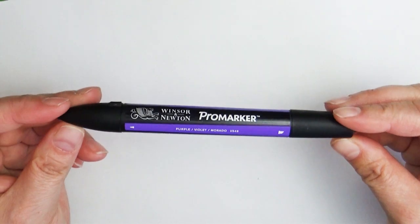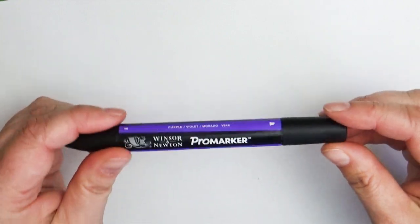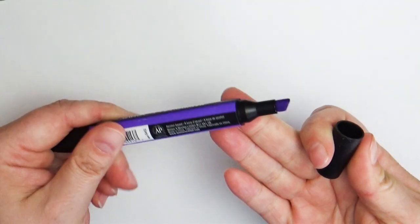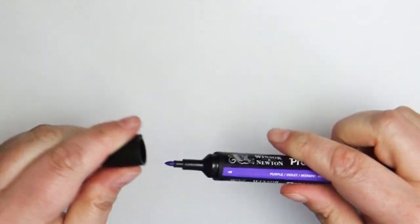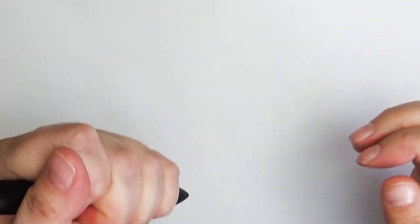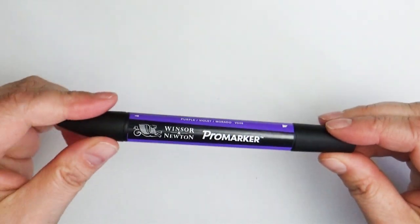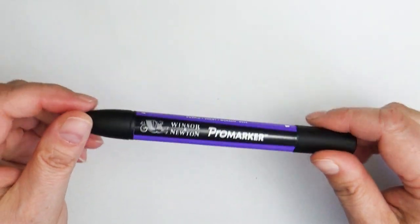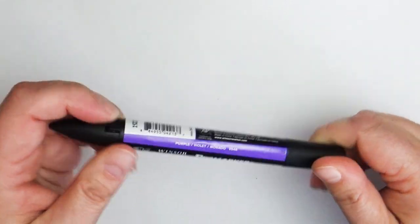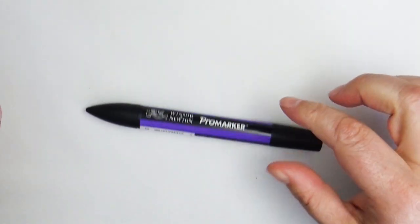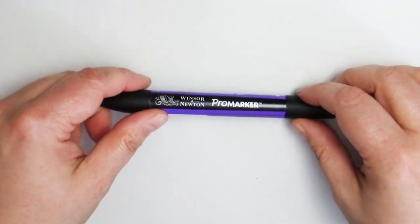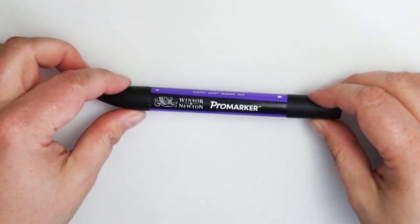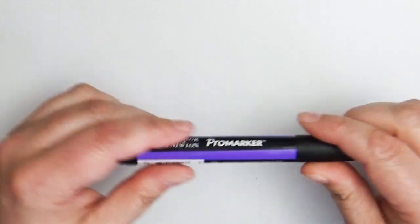The first ones here are the Pro markers and these are I think more of their original set. It comes with the chiseled nib on that side and then a bullet nib on this side. I really enjoyed the shape of these. They're nice, a good size for handling, not too big but not super thin. I also like this little bump right here because it keeps my markers from rolling off my desk. I live in a very uneven place so all my markers tend to roll, so I really appreciate this because they don't roll away.